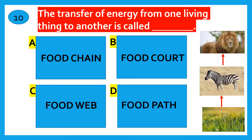The transfer of energy from one living thing to another is called — food chain, food core, food web, or food path? The correct answer is food chain.